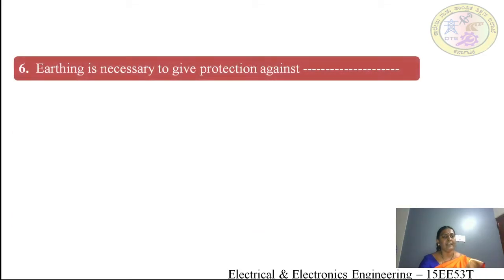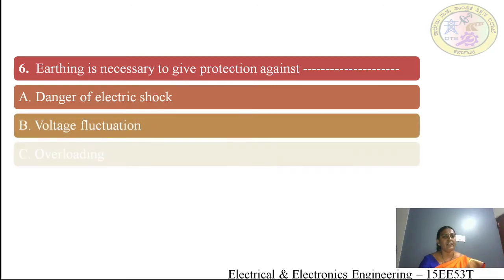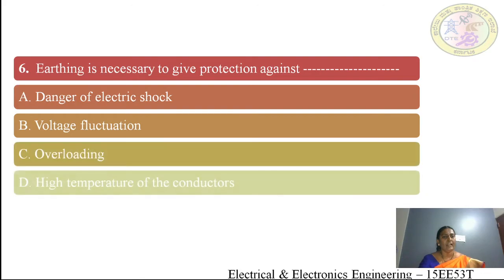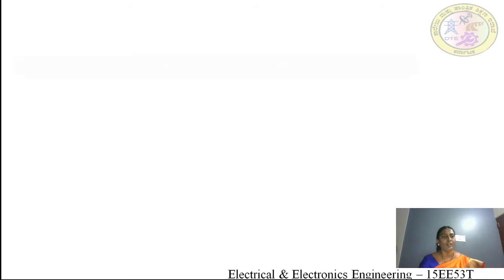Sixth question: earthing is necessary to give protection against — (A) danger of electric shock, (B) voltage fluctuation, (C) overloading and high temperature of the conductor. The answer is option A: danger of electric shock. Earthing is necessary to give protection against the danger of electric shock.